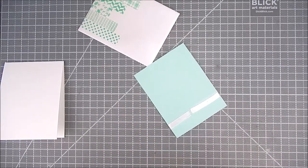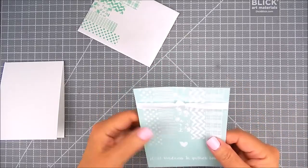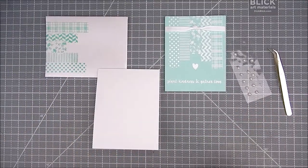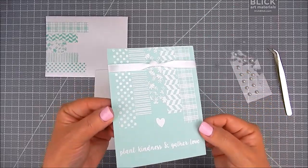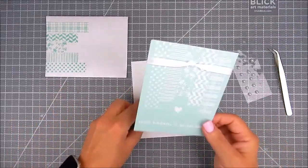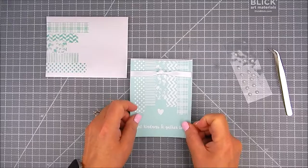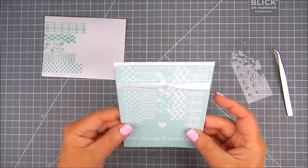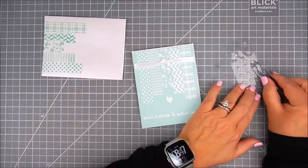I also added some foam tape to this back panel to have it lift up a little bit from the card base. I use Neenah 110 pound solar white card base and I score it in the middle with a scoring board.